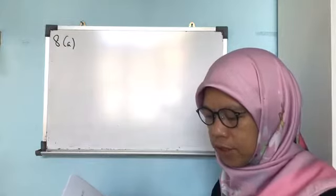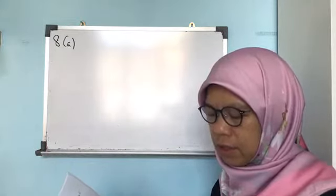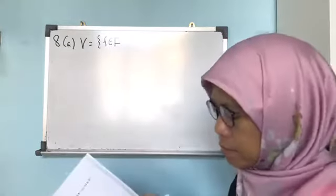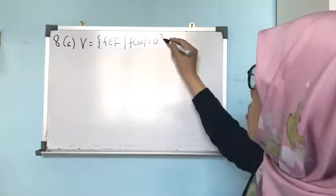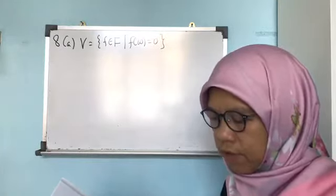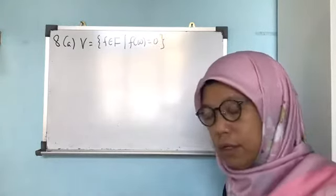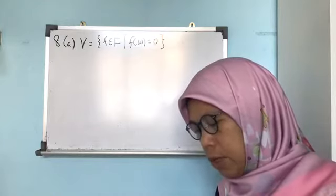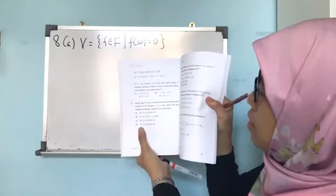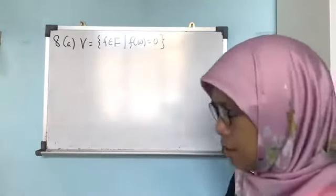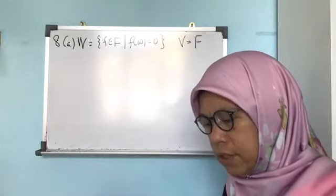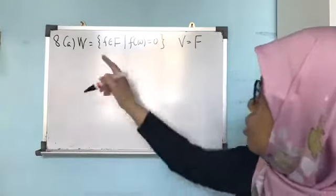Assume V is a set of all real functions, and W consists of all functions that satisfy the condition f(10) = 0. You have to show that W is a vector space. There's a typo in the question — it should be all W, not V. So these are all W, not V. V is all real functions, and you have to show whether W is a vector space. So just show W is a subspace of V.